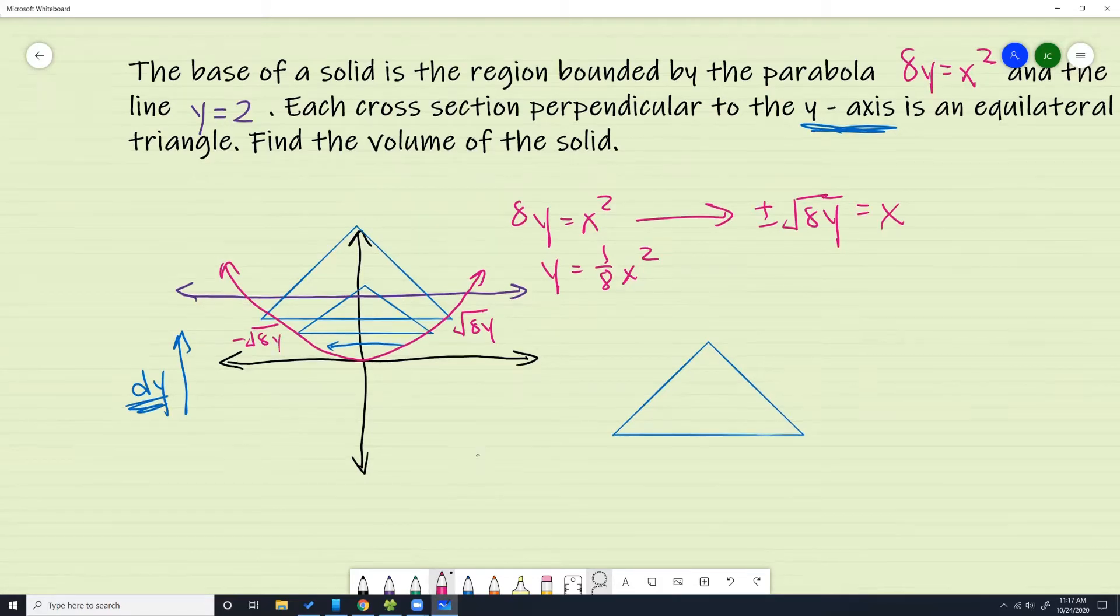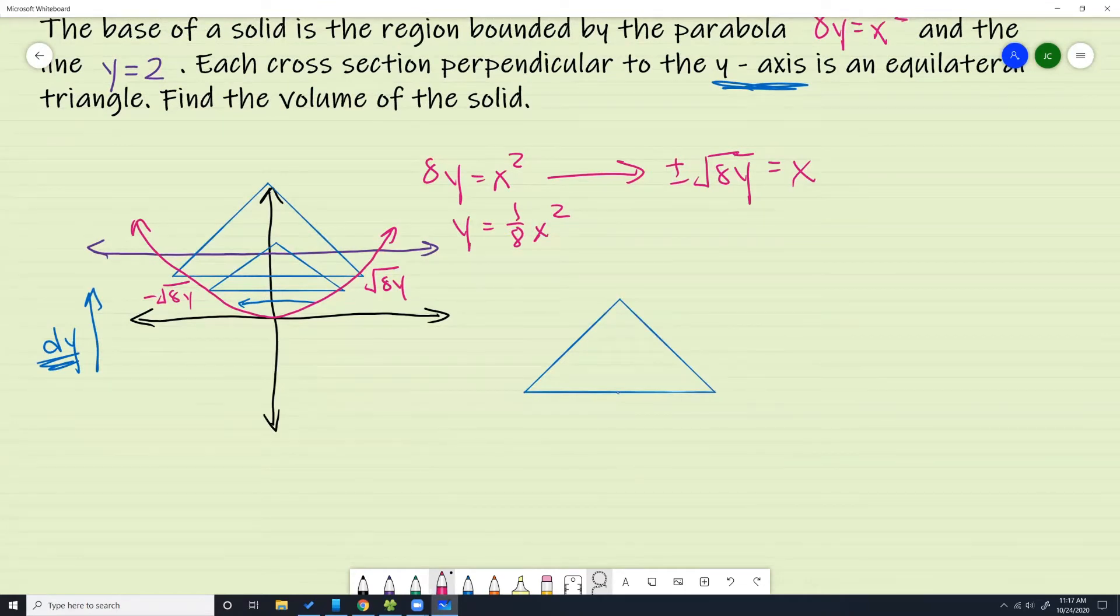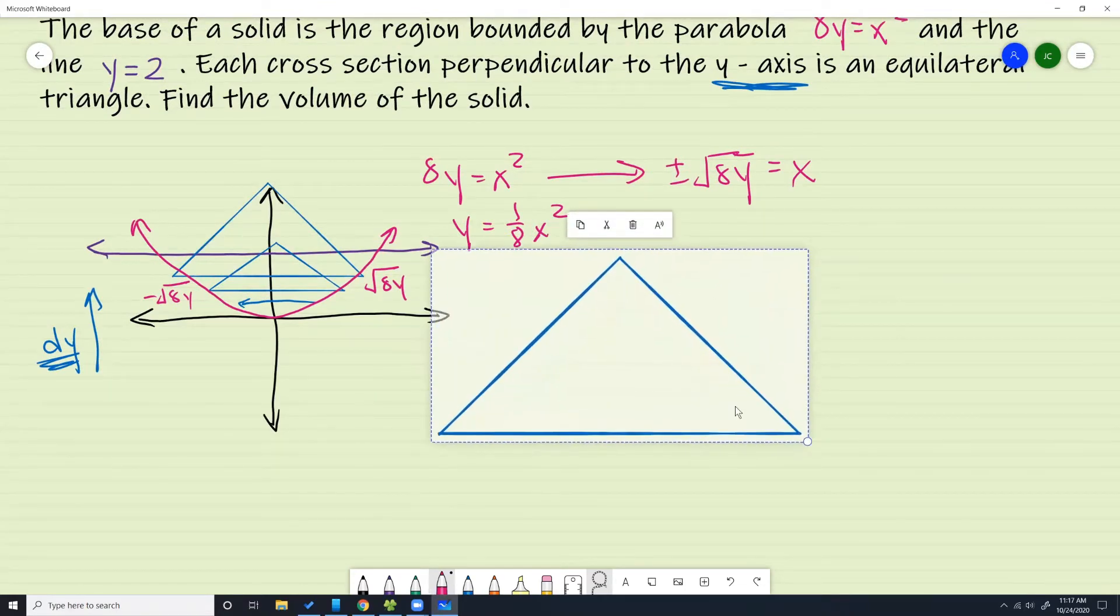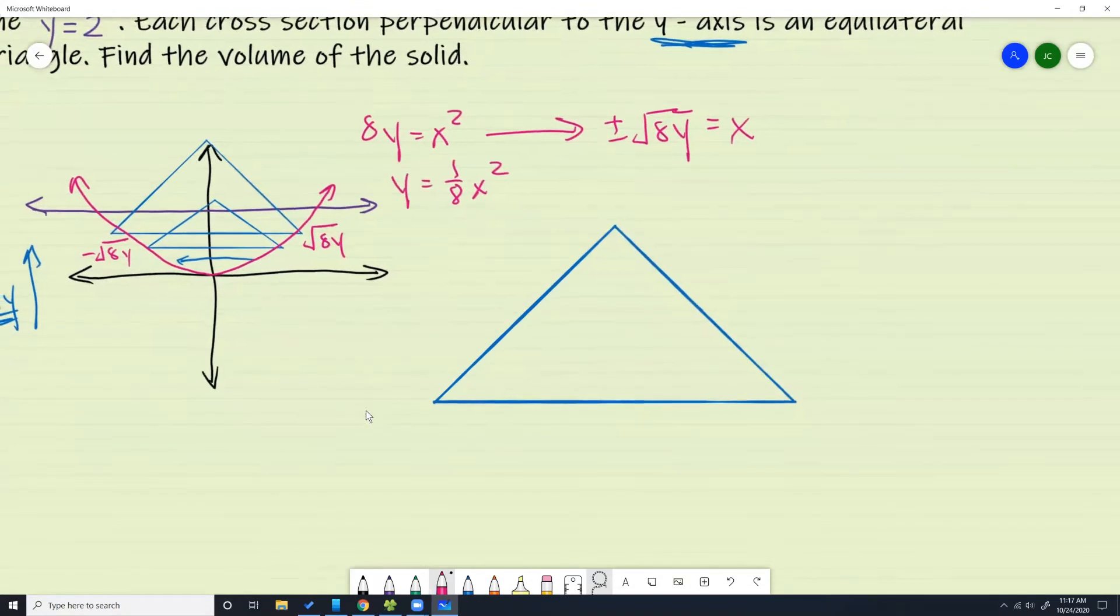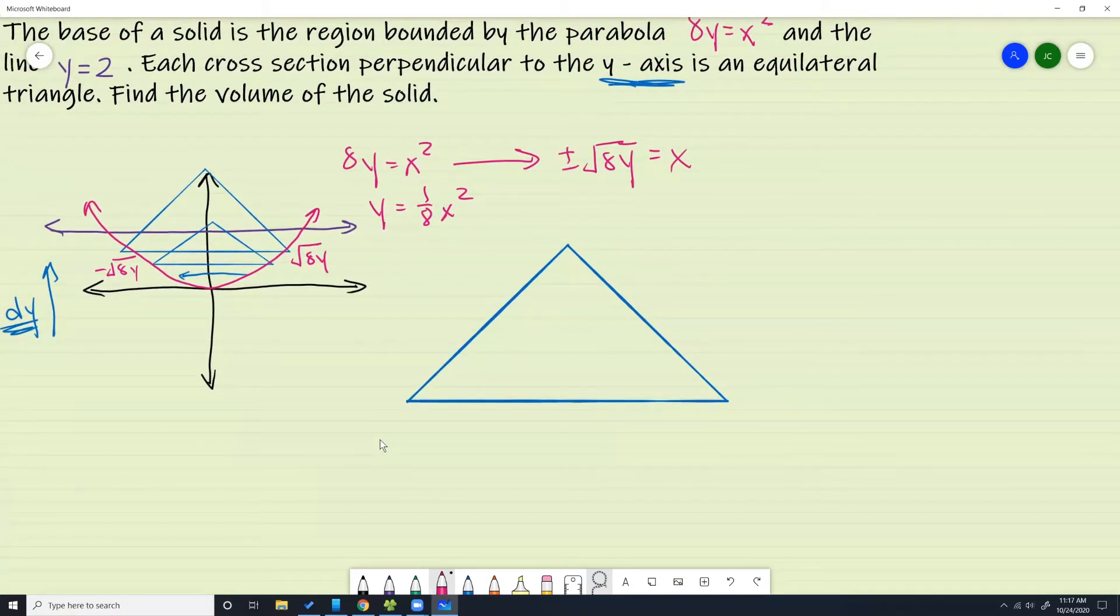Now we're ready to set up parts of our triangle. If you want the base length of the equilateral triangle from right to left, right minus left, that's going to be square root 8y minus negative square root 8y, to get me 2 root 8y. Negative minus negative is positive, so you add those.